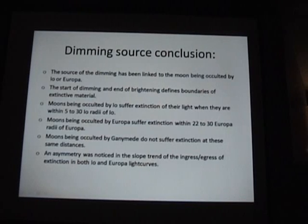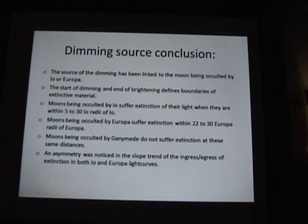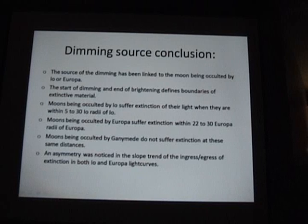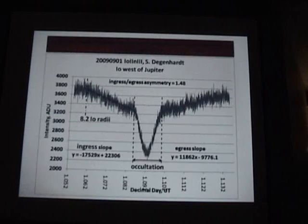Moons occulted by Ganymede do not suffer the same extinction. We did not have any Callisto occultations to test that because this all came about two months at the end of the mutual event season, so we just didn't have time. And then finally, let's look at the asymmetry.